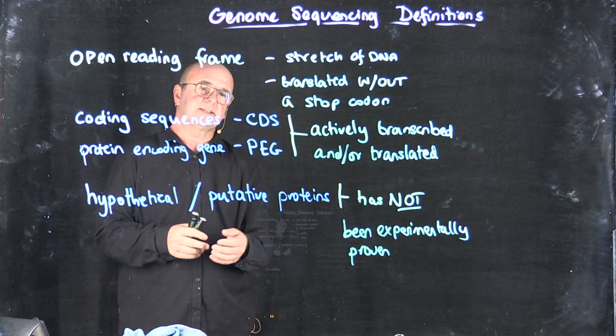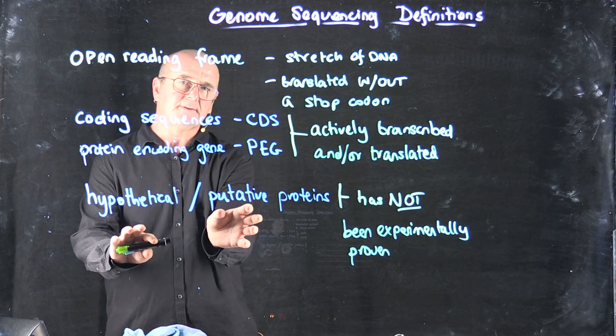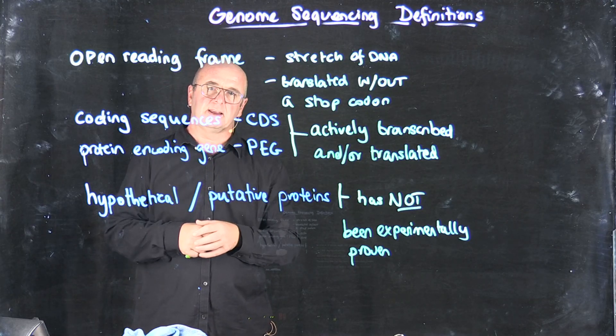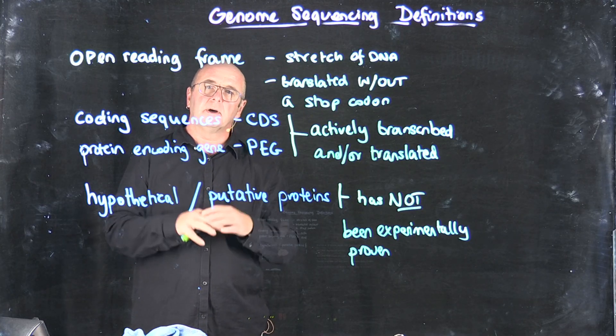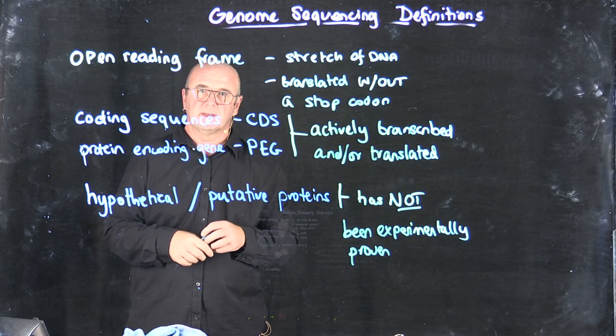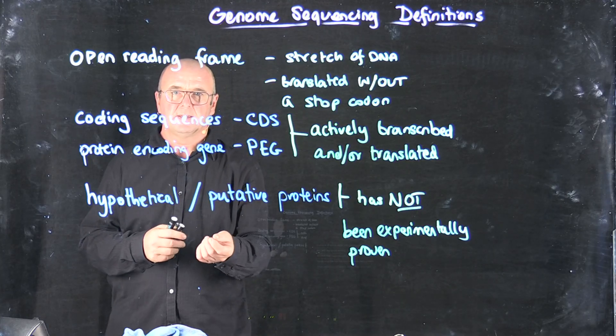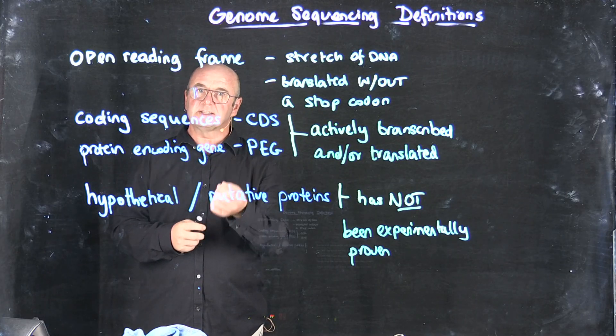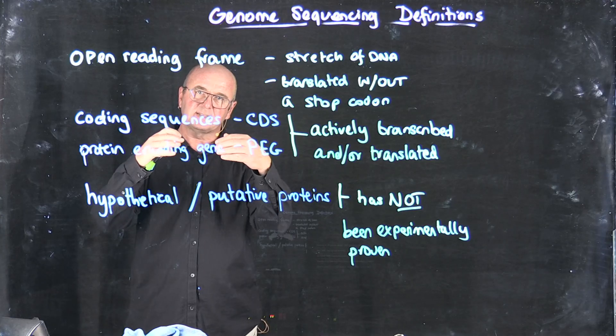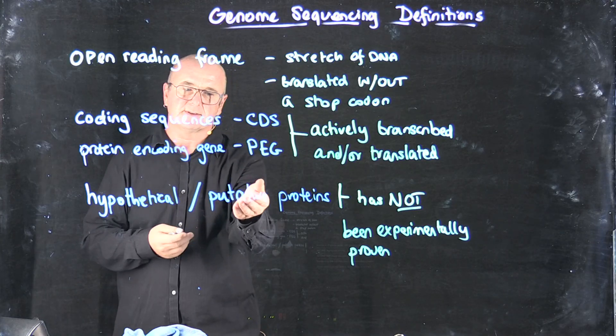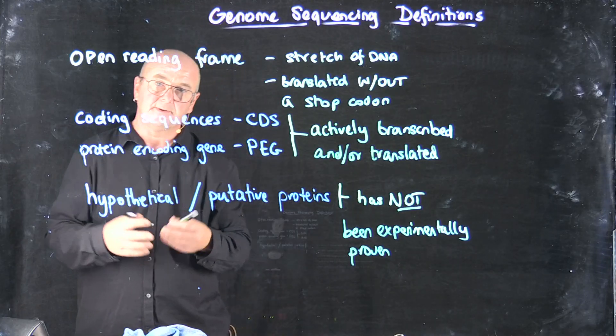In most modern genome annotation, we're trying to move away from using hypothetical and putative when we think genes are really doing the function even though we haven't actually experimentally proven it. We're never going to be able to experimentally test every protein. And if we're convinced, if there's enough evidence that indicates that this protein is doing that function, why do we need to give it the moniker putative or hypothetical?